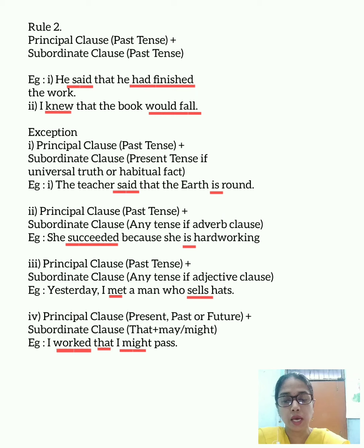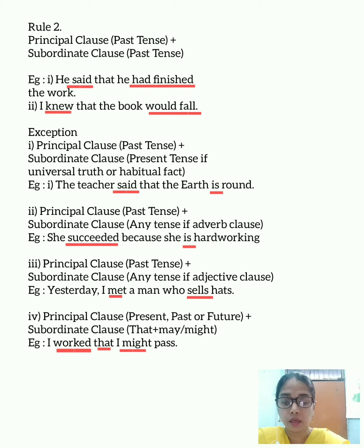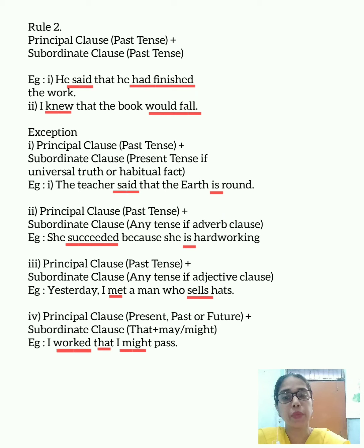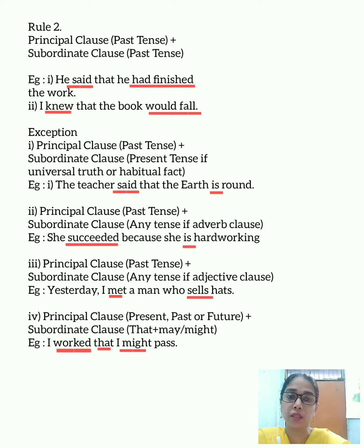The second example: 'I knew that the book would fall.' Here the principal clause is 'I knew,' which is in the past tense, and 'that the book would fall' is also in the past tense. So both the principal clause and the subordinate clause must be written in the past tense.